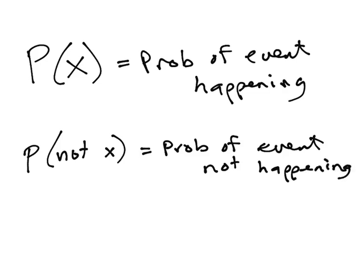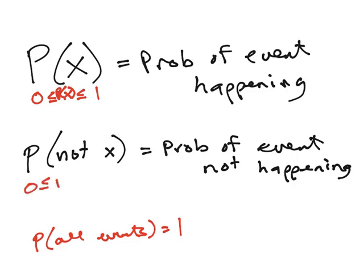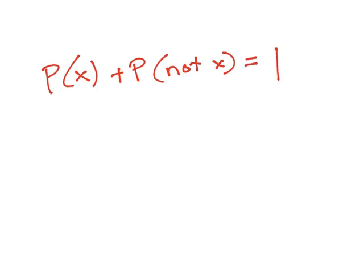We know by definition of probability that the probability of all events equals 1, because our probability of each is somewhere between 0 and 1. Our probability has to be somewhere between 0 and 1 for all of these. If I put every opportunity together, so the event happening and the event not happening together, these have to equal 1. The probability of the event plus the probability of not the event equals 1, because that is all the possibilities that we have.